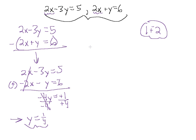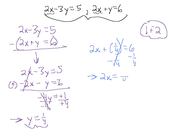Let's use the second equation. We have 2x plus y, where y is 1 fourth, equals 6. Let's subtract 1 fourth from both sides. Converting 6 into a fraction with denominator 4 gives us 24 over 4, so 2x equals 24 over 4 minus 1 fourth, which is 23 over 4. We divide both sides by 2, writing 2 as 2 over 1.